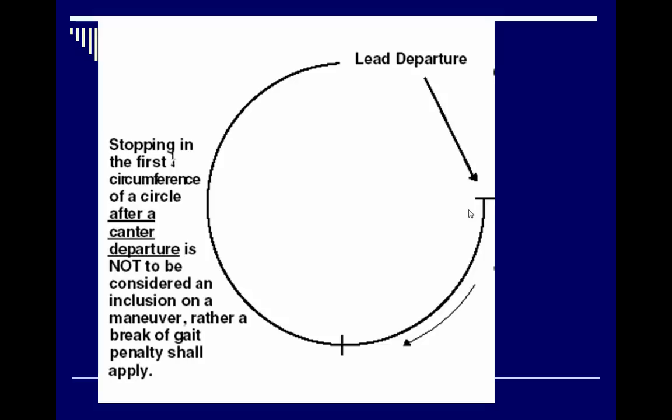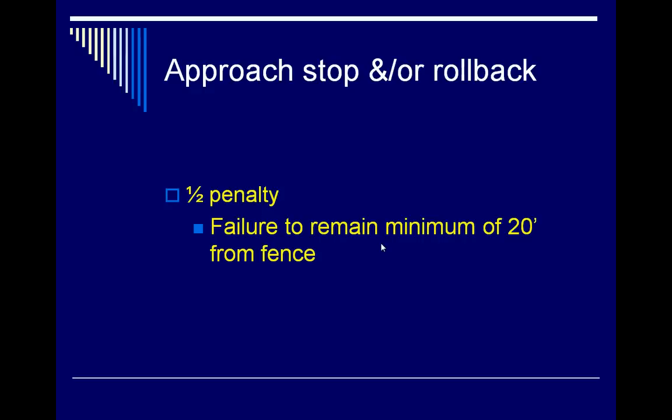Sometimes horses stop while running their circles. If they stop in the first quarter of a circle after the canter departure, it's not considered inclusion of a maneuver but rather a break of gait — a two-point penalty. Similarly, if a horse kind of does a half halt or stops and then goes on, that would also be considered a break of gait and assessed a two-point penalty.